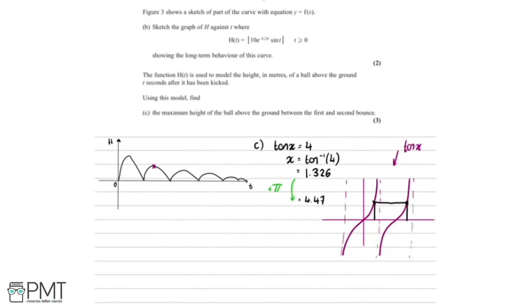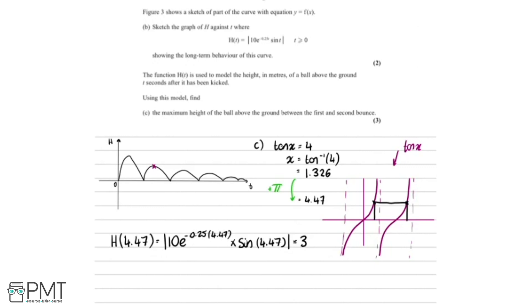Now we've found x, but the question asks for the height, not the x-value. So we need to evaluate h(4.47): that's the modulus of 10 × e^(−0.25 × 4.47) × sin(4.47). Putting that into the calculator, everything inside the modulus comes out to −3.18, but because it's a modulus the answer is positive 3.18 metres.